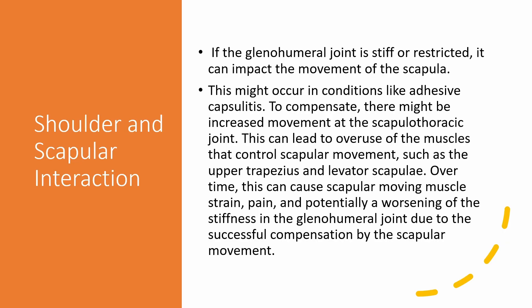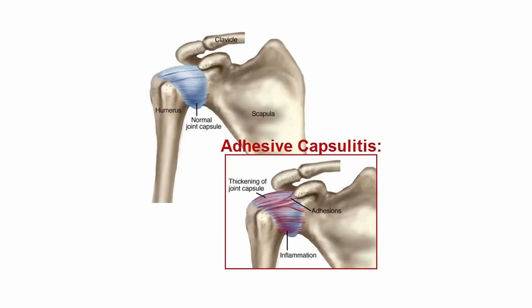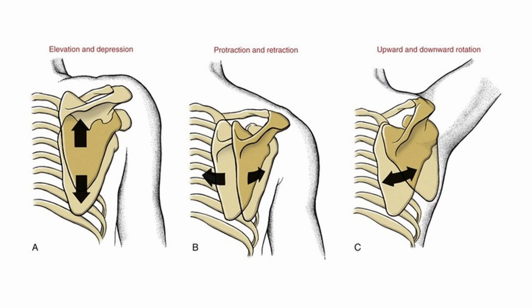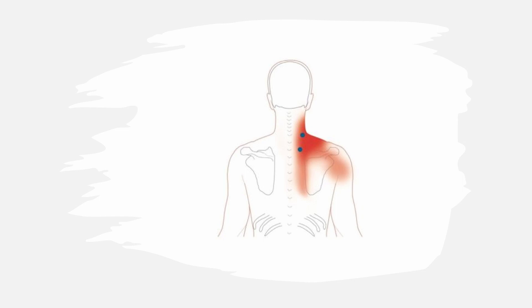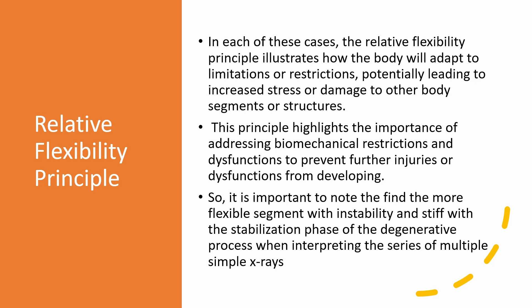In shoulder and scapular interaction, stiffness or restriction in the glenohumeral joint can affect scapular movement. For example, in conditions like adhesive capsulitis, there might be increased movement at the scapulothoracic joint to compensate. This could lead to overuse of the muscles controlling scapular movement, like the upper trapezius and levator scapulae, causing muscle strain, pain, and potentially exacerbating stiffness in the glenohumeral joint over time. The relative flexibility principle highlights how the body adapts to limitations or restrictions, potentially increasing stress or damage to other body parts, underscoring the importance of addressing biomechanical restrictions and dysfunctions.